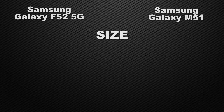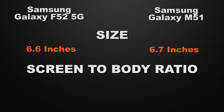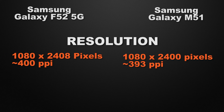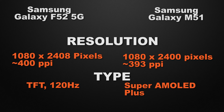Moving to display features: the F52 has a 6.6-inch display and the M51 has a 6.7-inch display — essentially a tie on screen size. The screen-to-body ratio is approximately 83.6% for F52 vs 86.7% for M51, so M51 wins. Both have Full HD+ resolution — a tie. For display type, the F52 has a TFT display with 120Hz refresh rate, while the M51 has a Super AMOLED display, making M51 the winner for sharper images, better viewing angles, and color vibrancy.